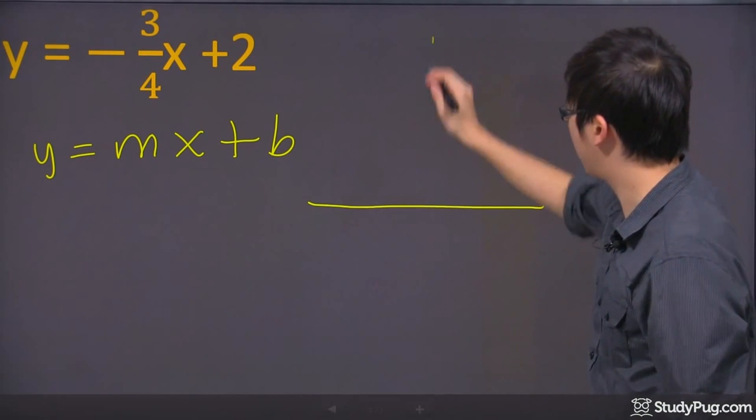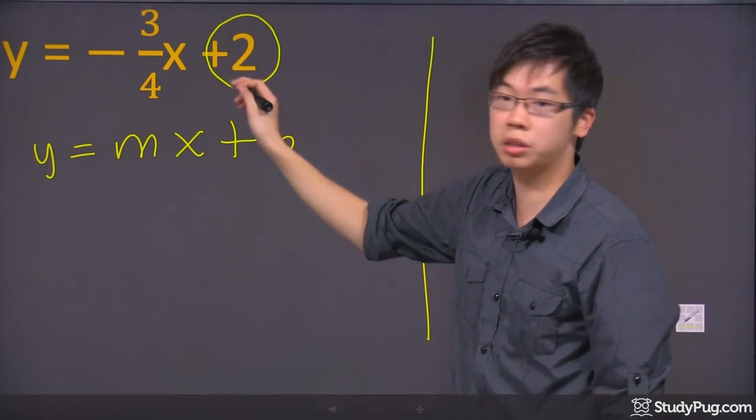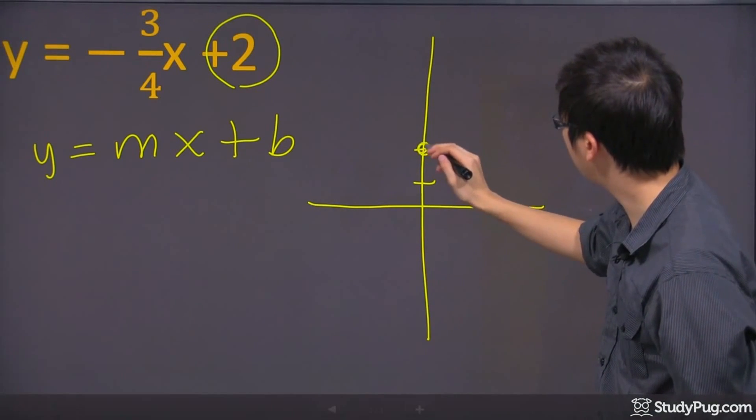So pretend that the standard position right here, roughly, and we're going to start from the y-intercept, which is the positive 2 here. So on your graph, you go where the 2 is, and on the y-intercept,